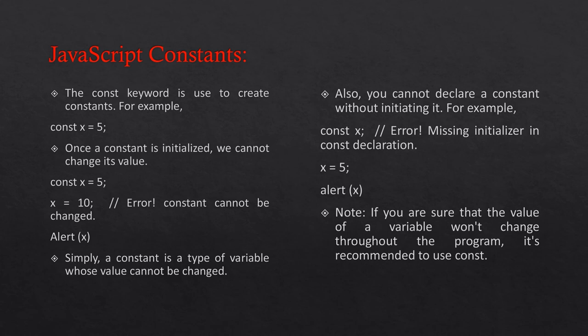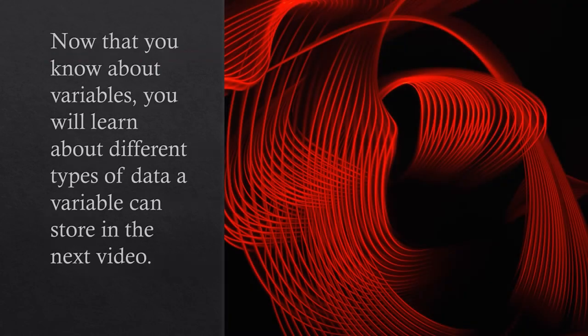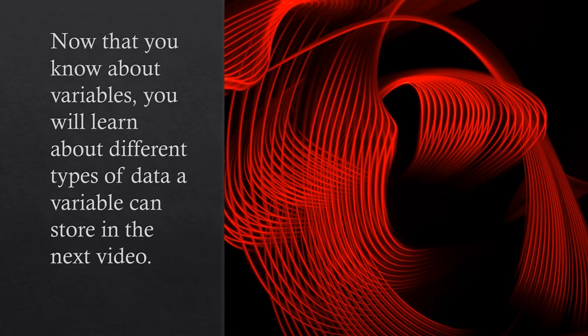For example, const x will give an error: 'missing initializer in const declaration'. Note: if you are sure that the value of a variable won't change throughout the program, it's recommended to use const. Now that you know about variables, you will learn about different types of data a variable can store in the next video.